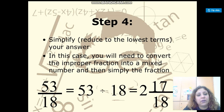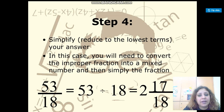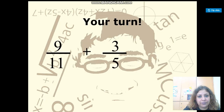Write the quotient as the whole number, the remainder as the numerator, and keep the denominator the same.